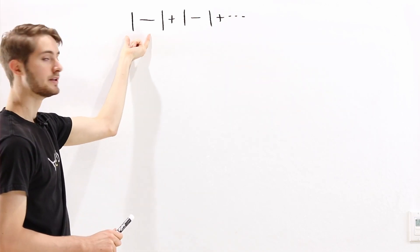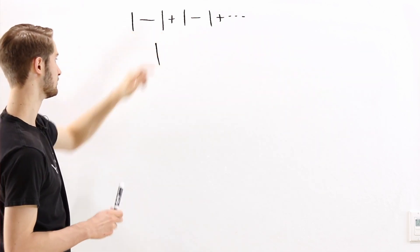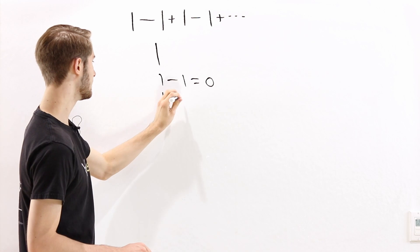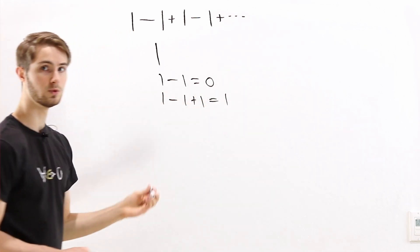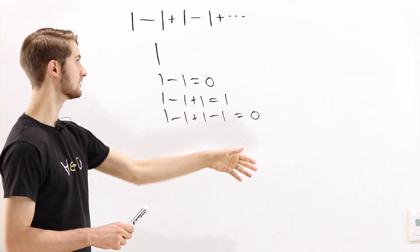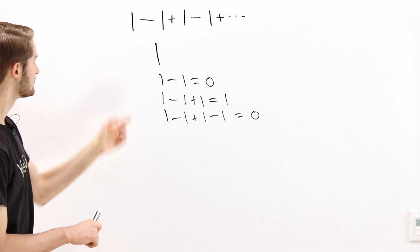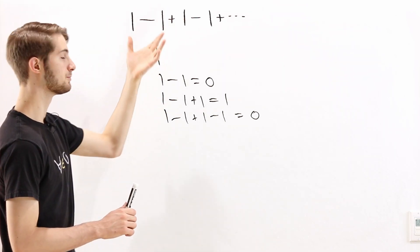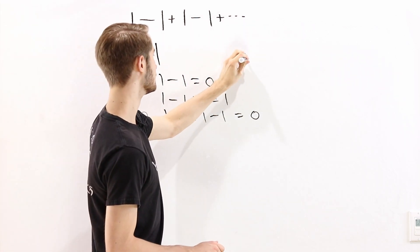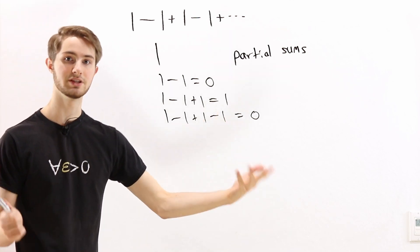There are infinitely many terms in this series, but maybe we can start by adding up the first few terms at a time. If we look at just the first term, that's going to be a 1. If we look at the first two terms, we have 1 minus 1, which is just 0. If we look at the first three terms, we have 1 minus 1 plus 1, which is going to be 1. And after that, 1 minus 1 plus 1 minus 1 is 0. These are called partial sums — what we get when we add up the first few terms of a series without adding up all the infinitely many terms.